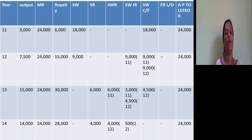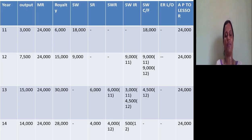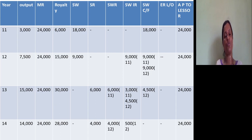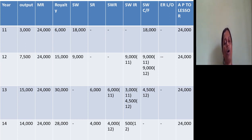Just look at this page. First year 2011: production is 3,000 tons. Second year: 7,500. Third year: 15,000 tons. Last year: 14,000 tons. Then I fill the minimum rent column — minimum rent is fixed at ₹24,000 for all four years. There is no strike at all. Then the royalty, which is based on oil taken: 3,000 × 2 = ₹6,000; 7,500 × 2 = ₹15,000; 15,000 × 2 = ₹30,000; 14,000 × 2 = ₹28,000. So I have filled the first four columns for all years.